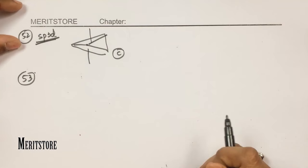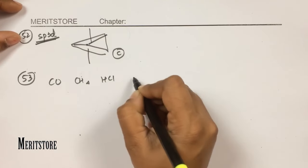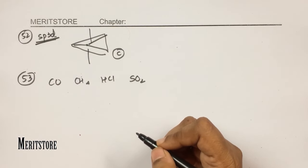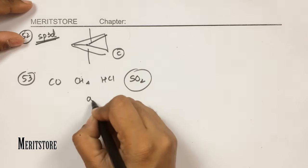Question number 53: four gases are given — carbon monoxide, methane, HCl, and SO₂ — and their critical temperatures are provided. The critical temperature is the maximum temperature at which a gas can exist in liquid form; above it the gas is gaseous, below it liquid. Higher critical temperature means easier liquefaction. SO₂ has the highest critical temperature, so it is liquefied most easily. Option A.